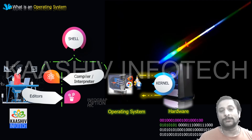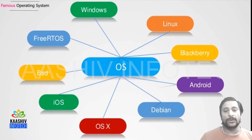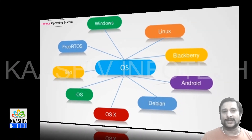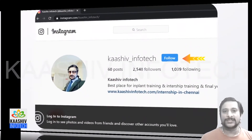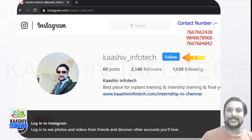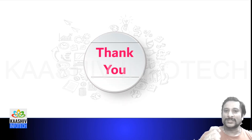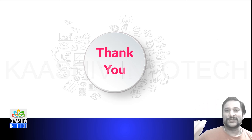The operating system is a major component. Examples of operating systems include: Windows, Blackberry, Android, Debian, OS X, iOS, BSD, and FreeRTOS. For a detailed classification, there will be a dedicated video. You can find complete tutorials on our website at Wikipedia.com/tutorial/operatingsystem. You can also contact me on Instagram and press the follow button. Please like, share and motivate me. This is Venket signing out from Wikitiki and Kashuv Info Tech. Thank you.